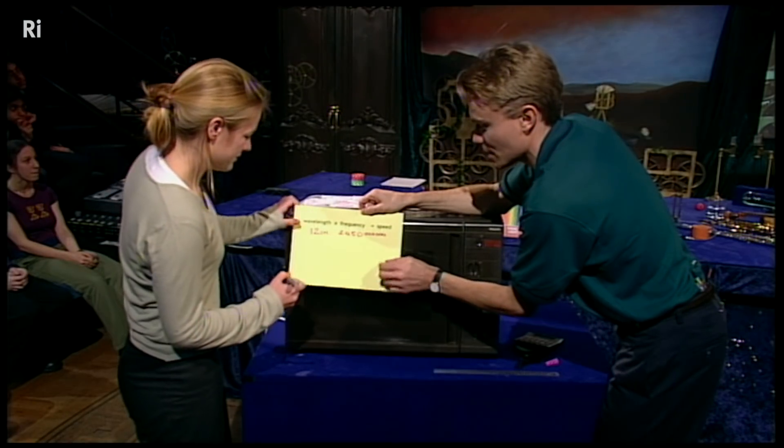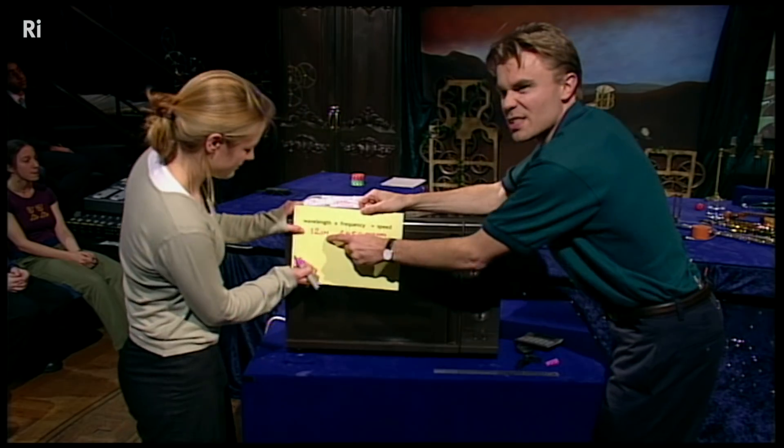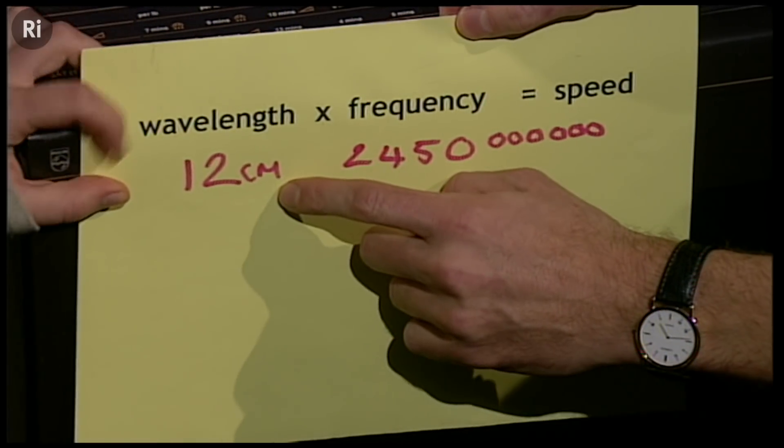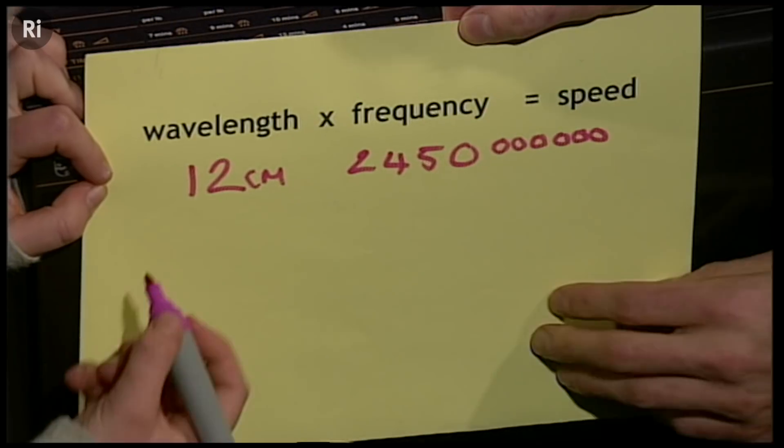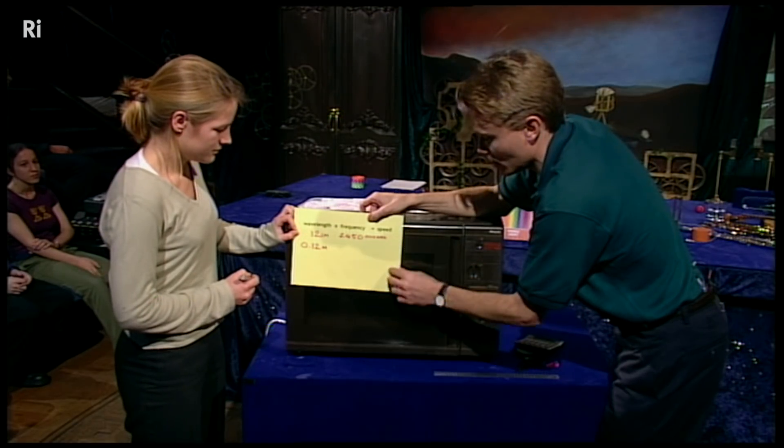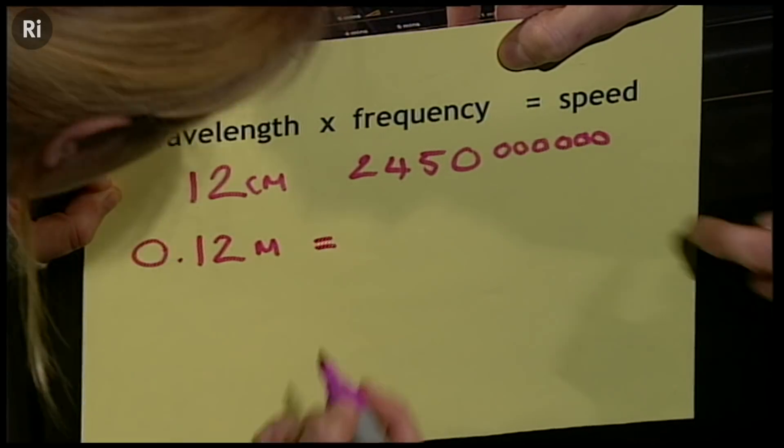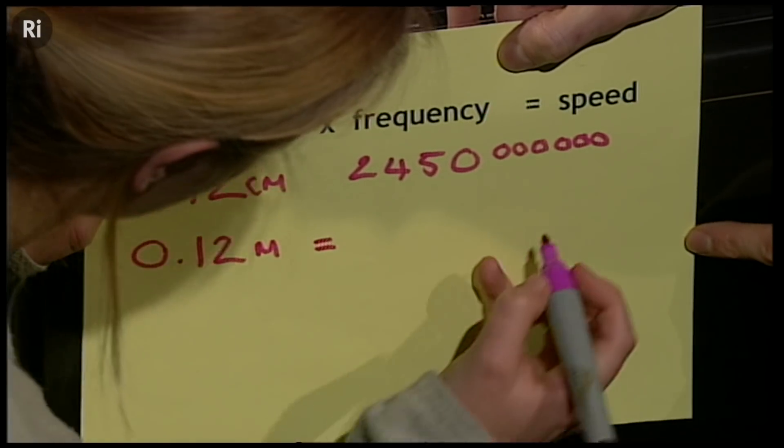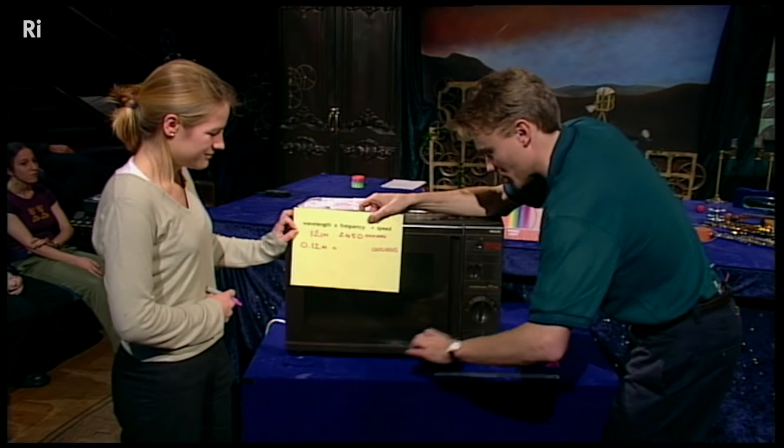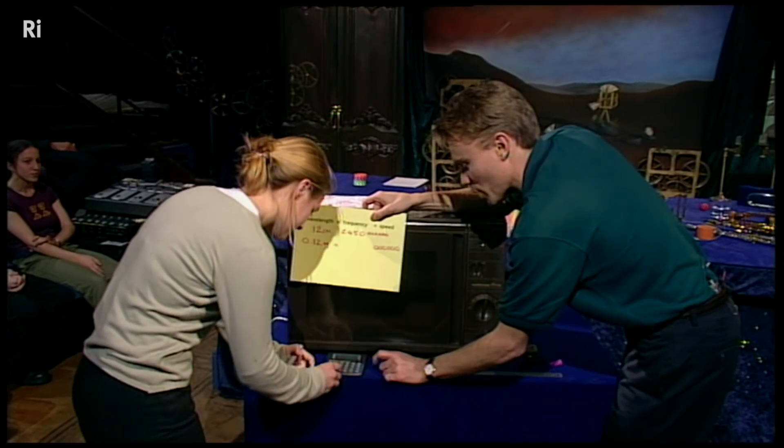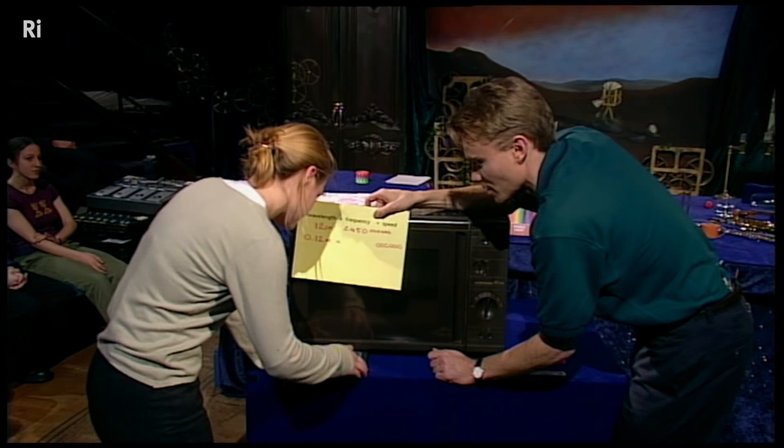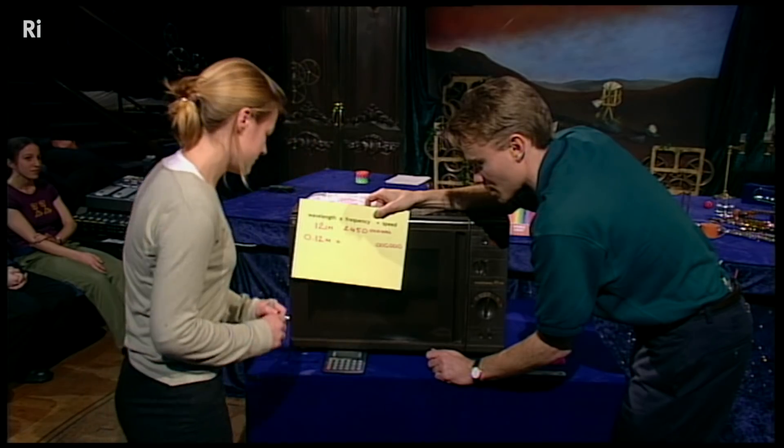Now we need to just multiply these things together. Except we should really convert this into metres, because this is oscillations per second times we'd like it to be metres. So let's turn 12 centimetres into 0.12 metres. And we've got to multiply these two numbers together. Let's put an equal sign here. And write down here six zeros, so we take care of the zeros. And now, I want you Helen, to multiply 0.12 by 2450. That gives 294.